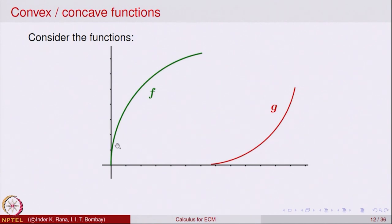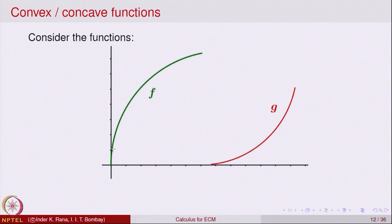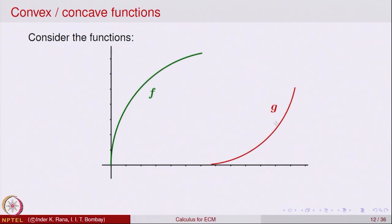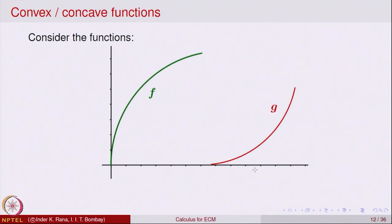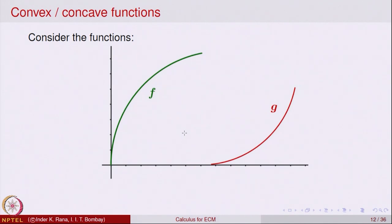From the picture it looks like f is a nice continuous smooth function — there are no corners and there are no breaks — so mathematically one says that f is continuous and, more strongly, f is a differentiable function. Similarly, g also looks like a nice smooth graph without any breaks, so g is also a differentiable function. Both functions are differentiable, and both f and g are increasing: as you move from left to right the graph is rising.